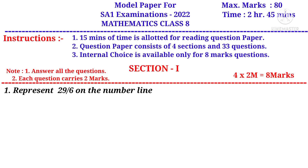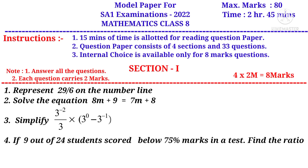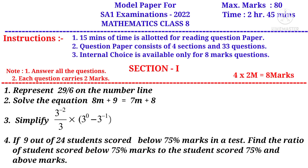First question: Represent 29 by 6 on the number line — from Chapter 1, Rational Numbers. Second question: Solve the equation 8m plus 9 is equal to 7m plus 8 — from Chapter 2, Linear Equations in One Variable. Third question: Simplify 3 power minus 2 by 3 into 3 power 0 minus 3 power minus 1 — from Chapter 4, Exponents and Powers. Fourth question: If 9 out of 24 students scored below 75% marks in a test, find the ratio of students who scored below 75% to those who scored 75% and above — from Chapter 5, Comparing Quantities Using Proportion.